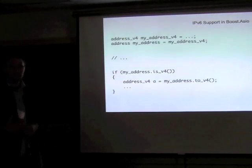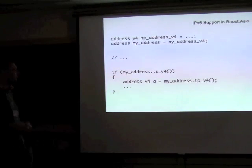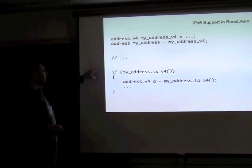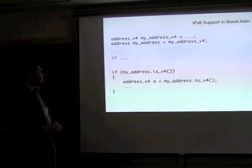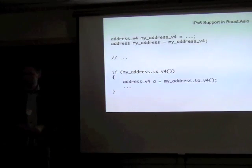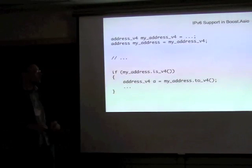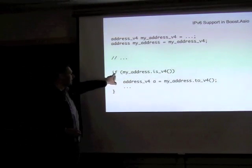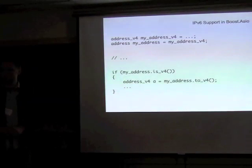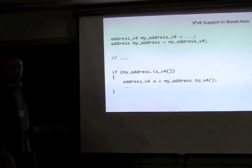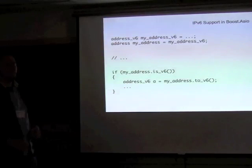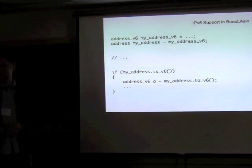If you need to deal with specific address types, given an address_v4 you can assign it into the generic address class. Alternatively, you can test and then extract the protocol-specific address from the generic type. The same applies for IPv6.